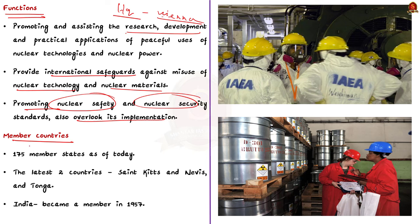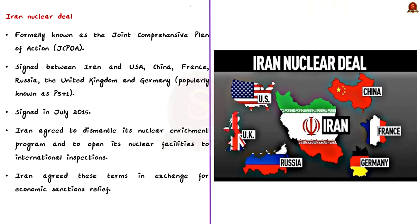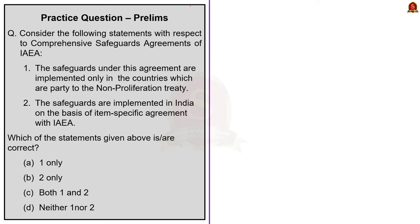The IAEA has 175 member states as of today. The latest two countries to join IAEA are St. Kitts and Nevis and Tonga. India became a member in 1957. Consider the following statements with respect to comprehensive safeguard agreements of IAEA: the safeguards under this agreement are implemented only in countries party to the Non-Proliferation Treaty; the safeguards are implemented in India on the basis of item-specific agreements with IAEA. Statement one is wrong because the safeguards are implemented in non-NPT member states also. Statement two is correct — in India, safeguards are implemented on the basis of item-specific agreements with IAEA. The correct answer is option B: two only.